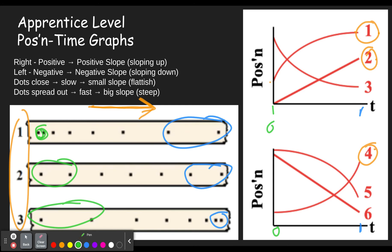Getting back to the fact that dot diagram one is going slowly at the start — that means it starts out with a fairly flat slope. Graph one starts out pretty steep, so that's not right. Graph two starts out kind of steep. Graph four starts out really flat. Using the end to double-check: dot diagram one ends up going really fast, which means steep, and graph four ends up very steep. So this one is number four.